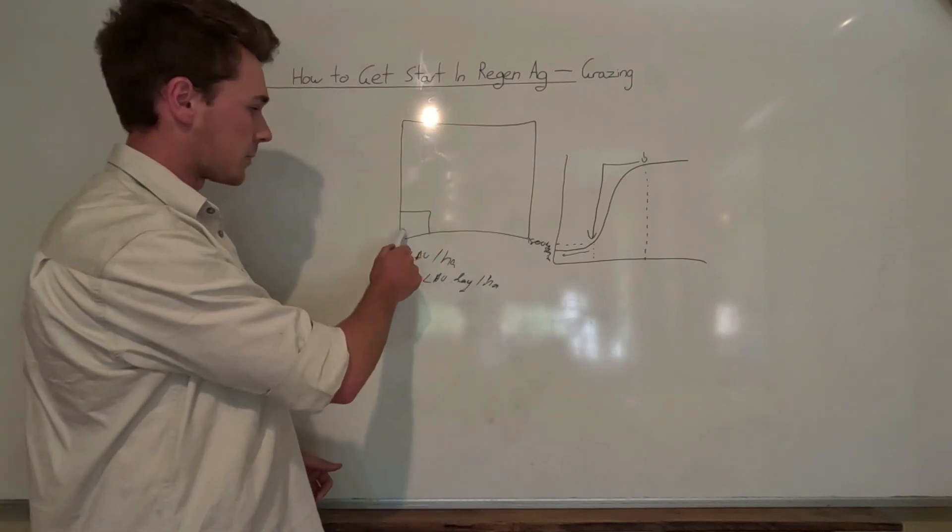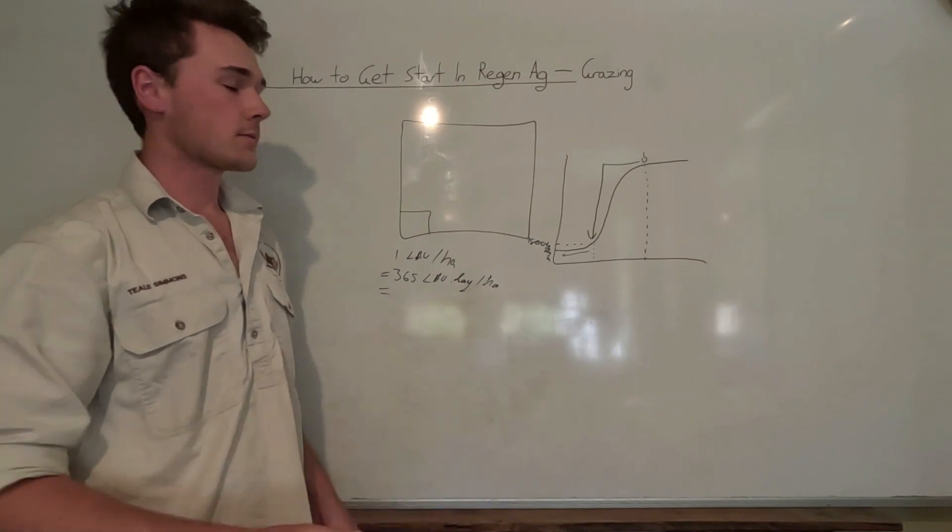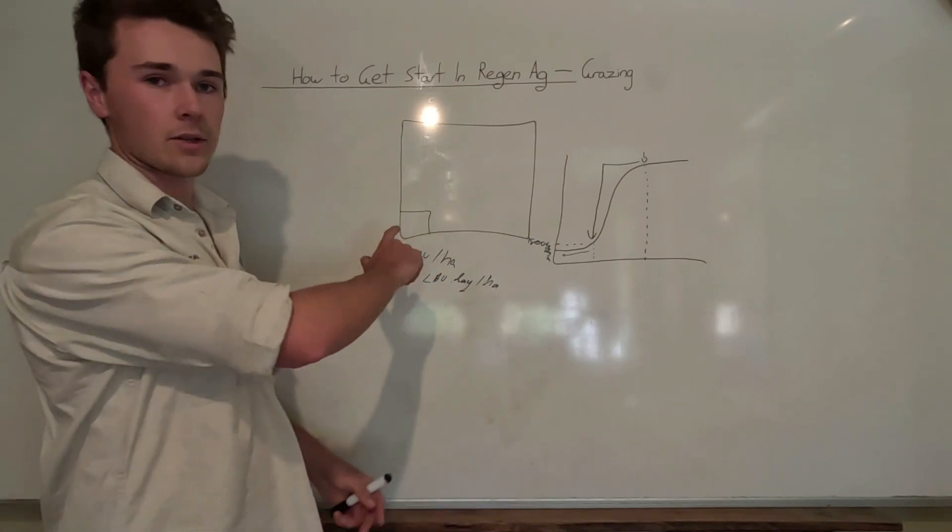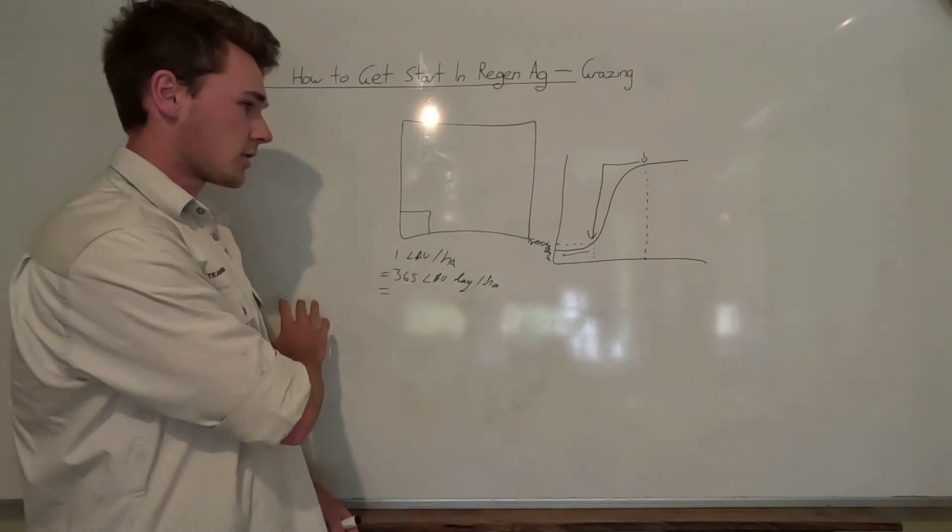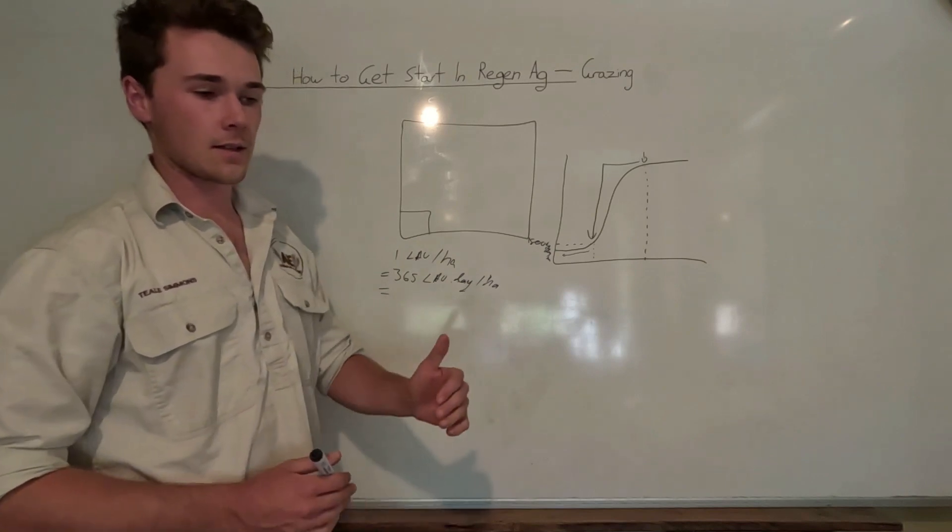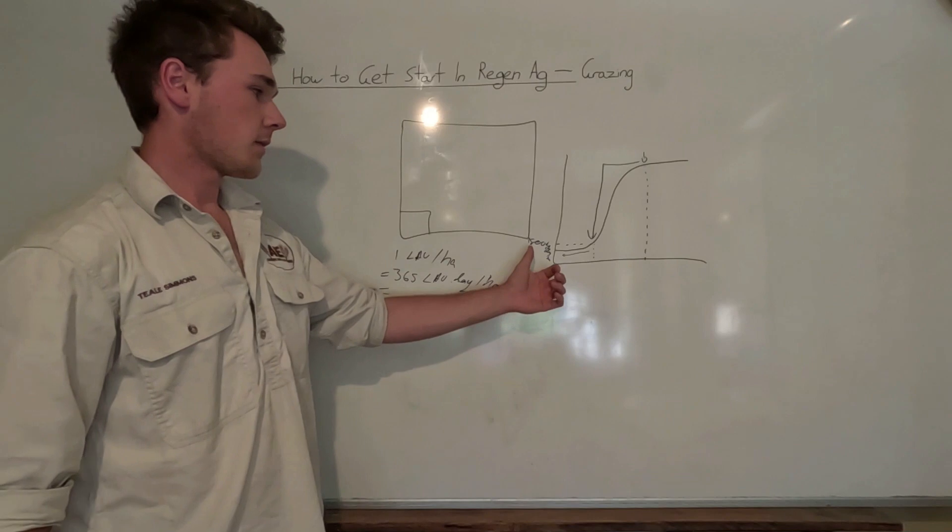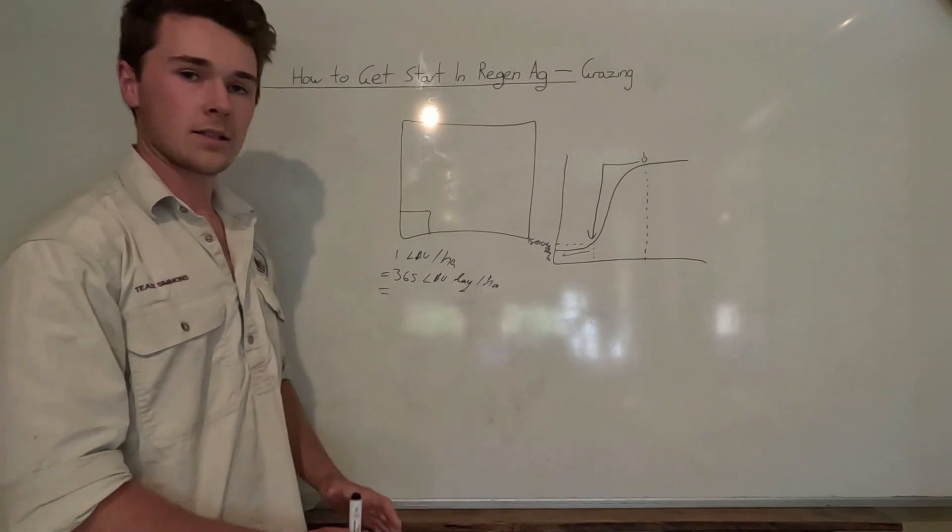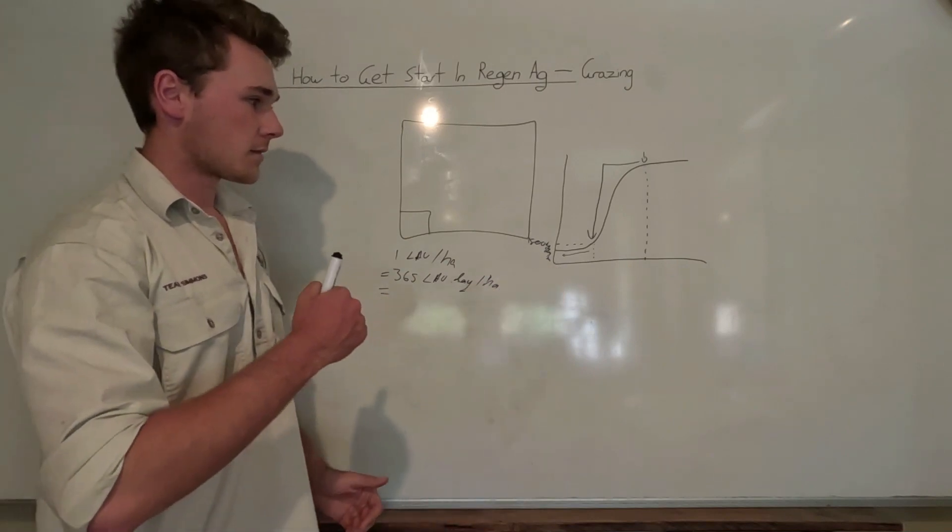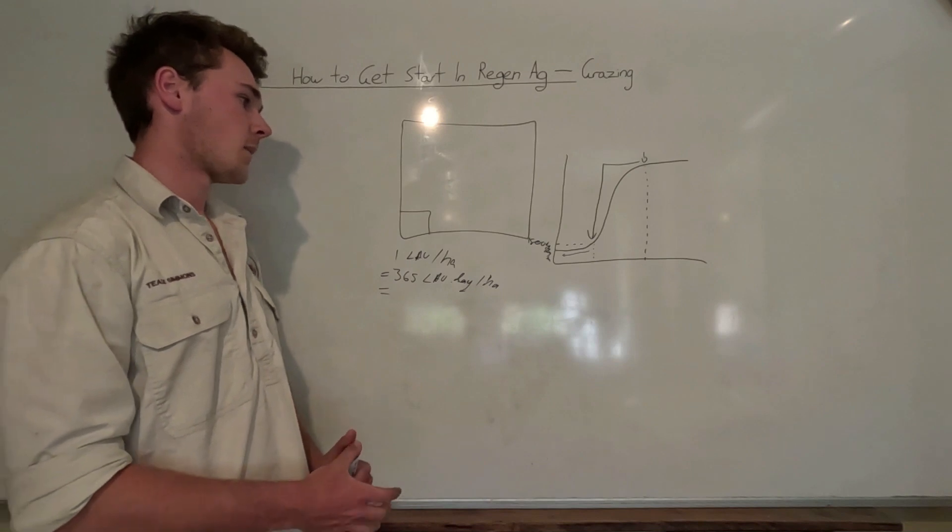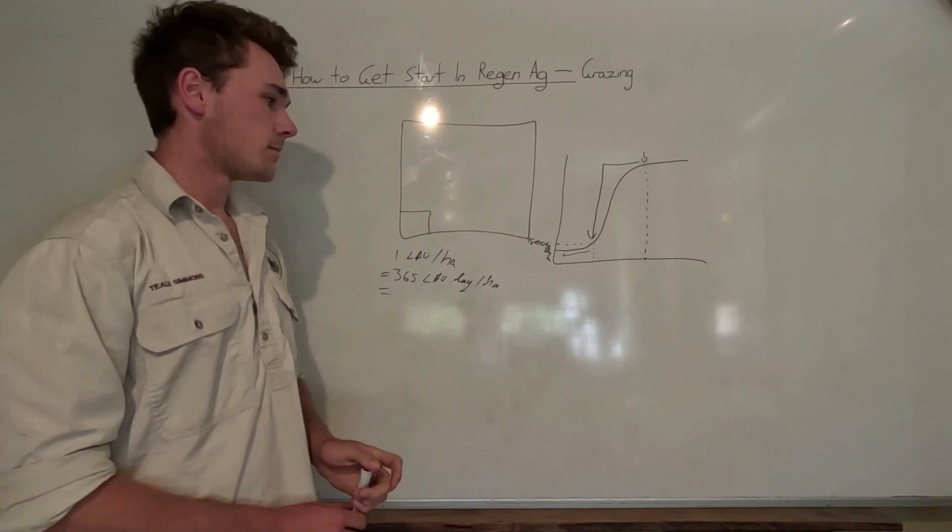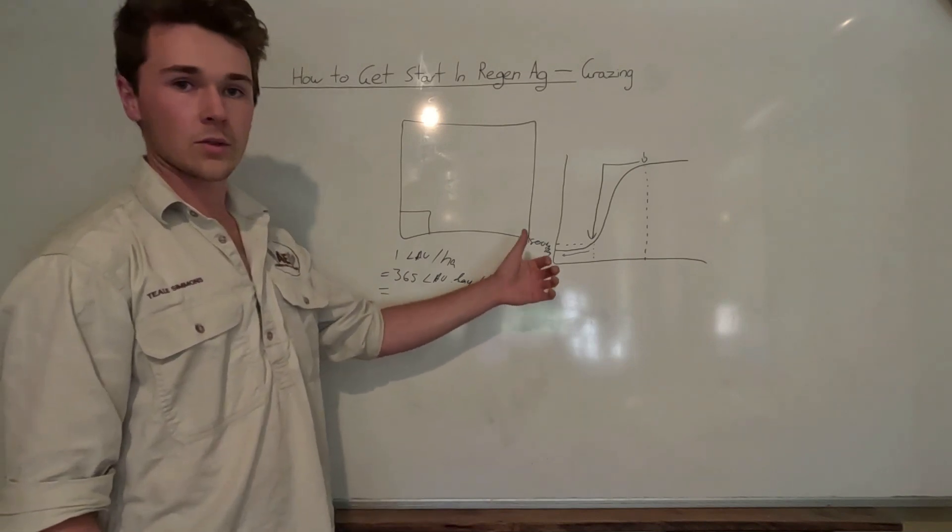So perhaps put this block close to your house where you can just observe it, come every hour, two hours and just see how the cattle are going, see how much they've grazed down. And if they start approaching this number just move them off. There's no problem with moving them on too soon.